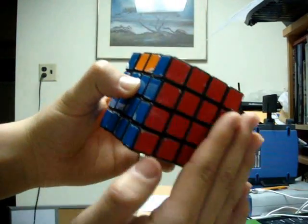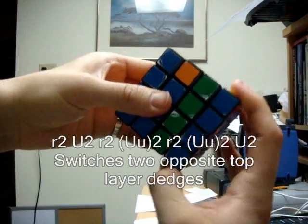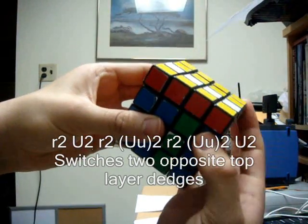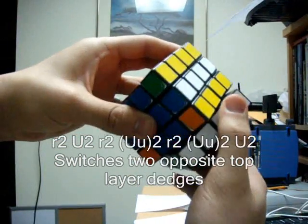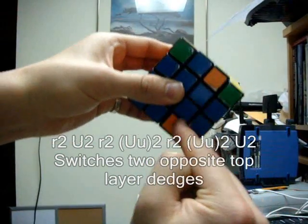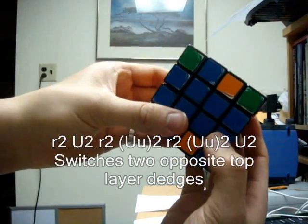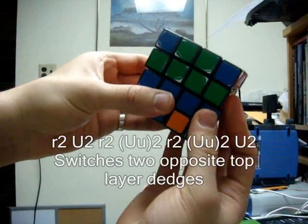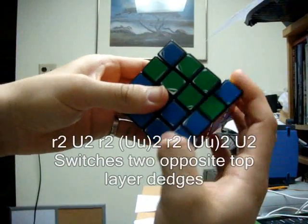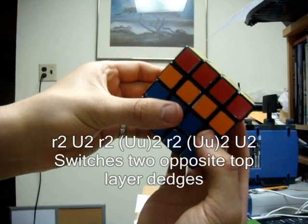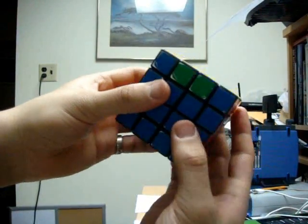So hold that completed side on the right and you do inside right face 180 degrees, up face 180 degrees, inside right face 180 degrees, just this face is going 180 so you have to remember to turn this one back, both up faces 180 degrees, inside right face 180 degrees, both up faces 180 degrees and then just the up face 180 degrees.